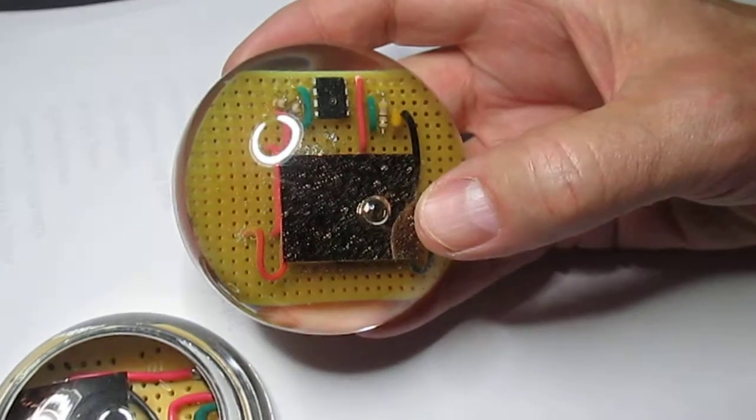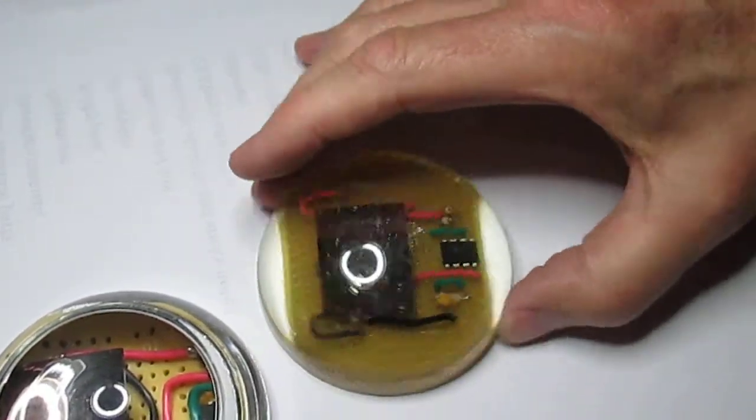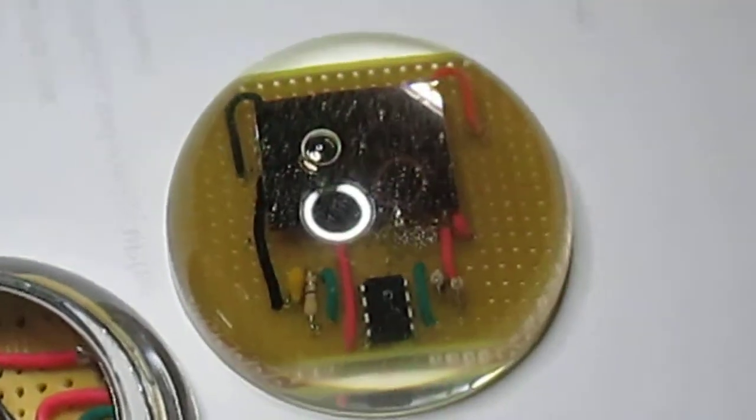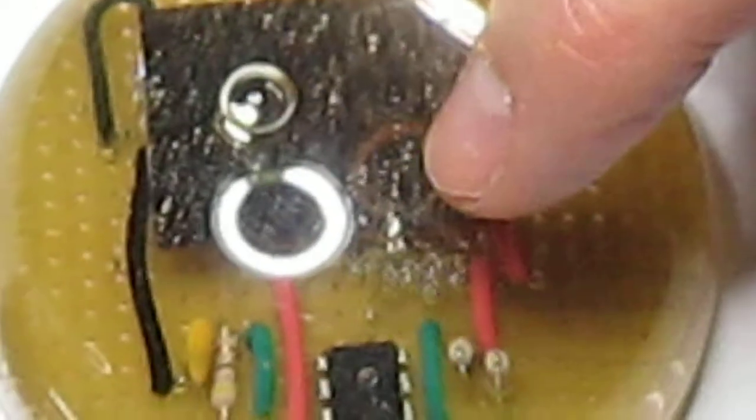We've got a 4.5 volt, 6 milliamp solar cell, and on this side, a circuit board with a discrete 555, very efficient, brand new 555 timer, and a little tiny green LED.